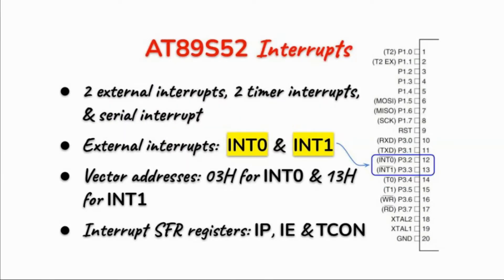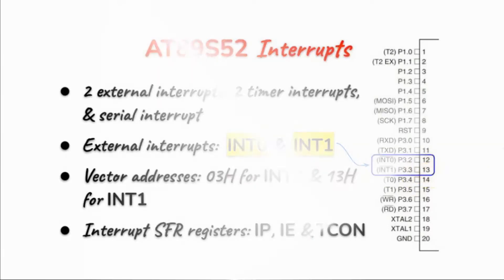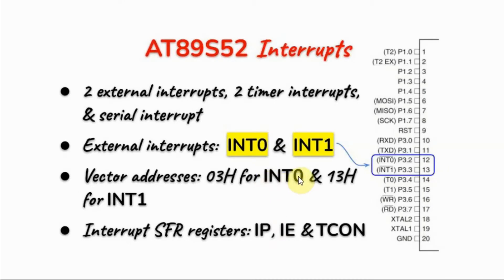Today we'll focus on external interrupts, namely interrupt 0 and interrupt 1, which are located at pins 12 and 13 respectively. The vector address of interrupt 0 is 03 hexadecimal, and for interrupt 1 it's 13 hexadecimal. These addresses must be inserted within the assembly code so that the assembler program knows where to jump when the interrupt occurs.